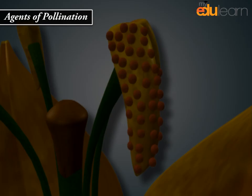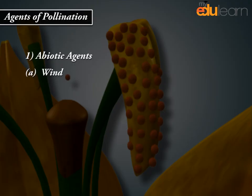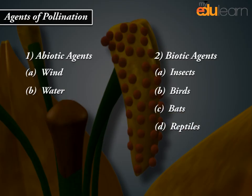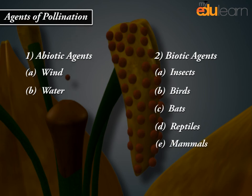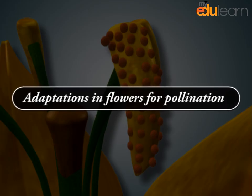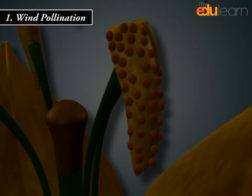Agents of pollination include abiotic agents — Wind and Water — and biotic agents: Insects, Birds, Bats, Reptiles, and Mammals.